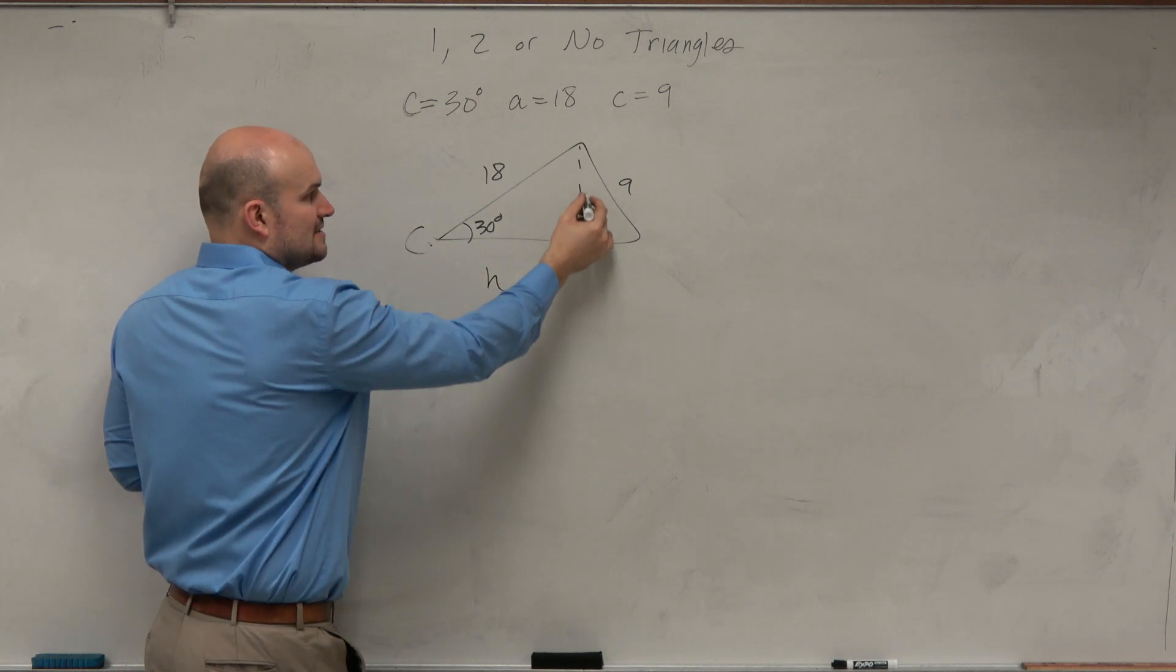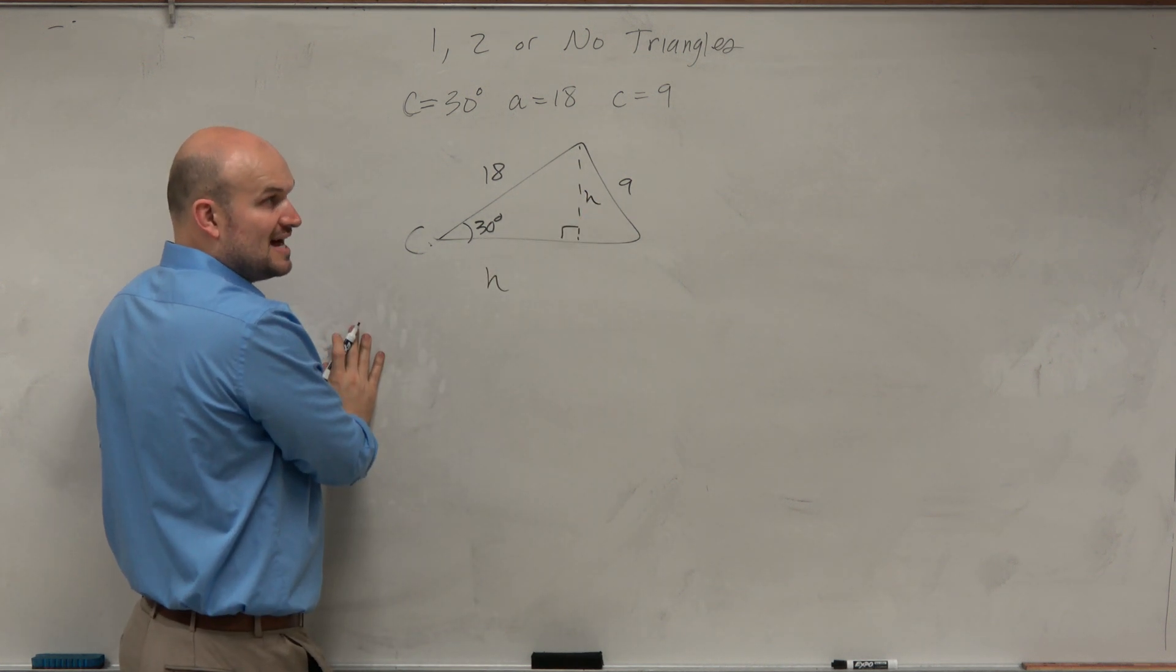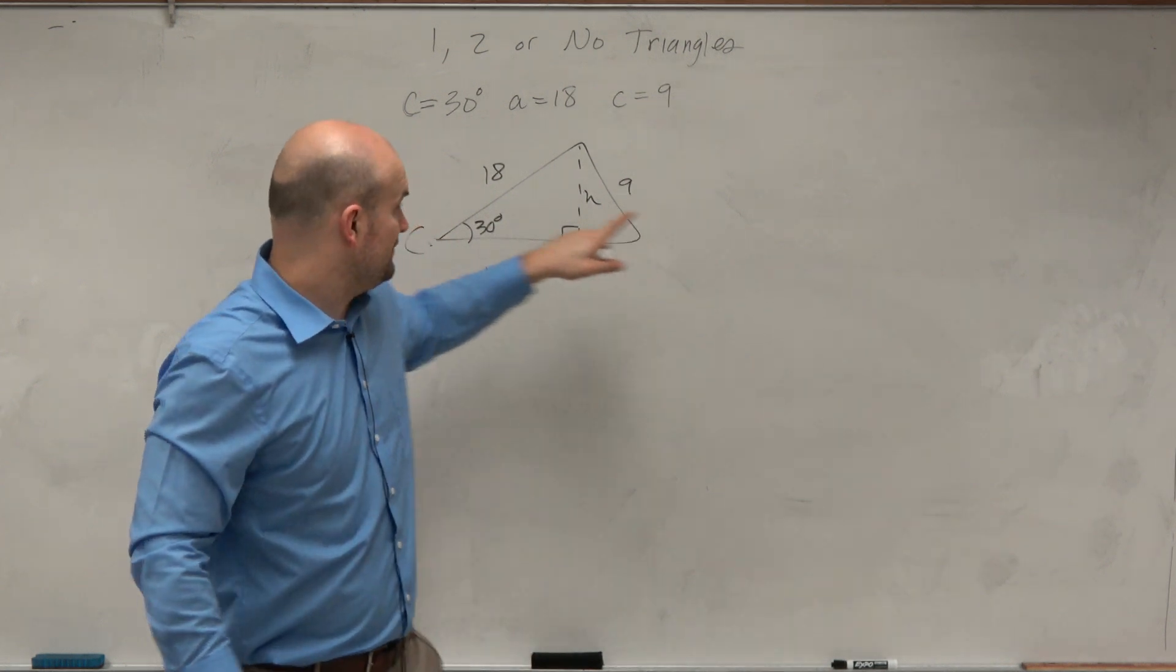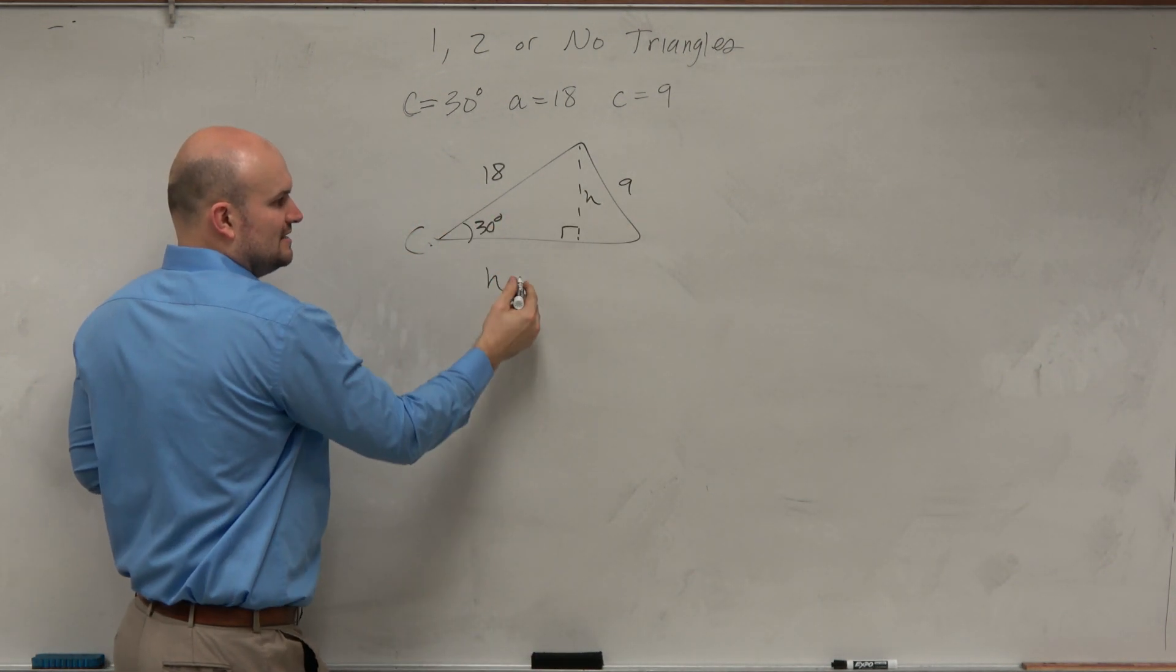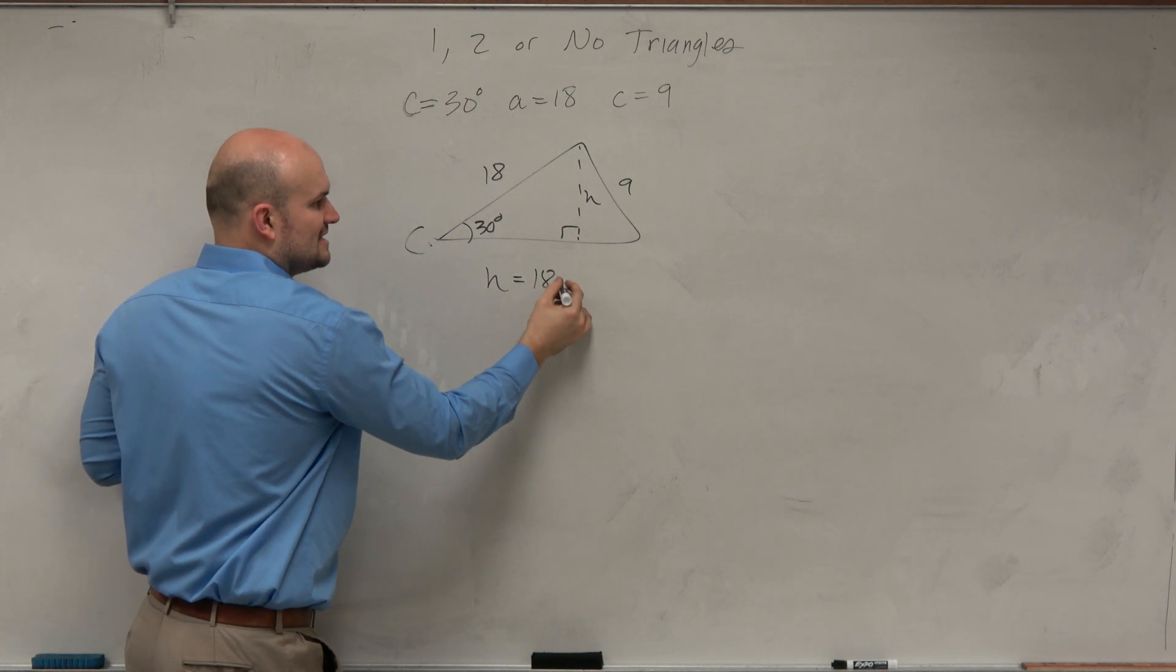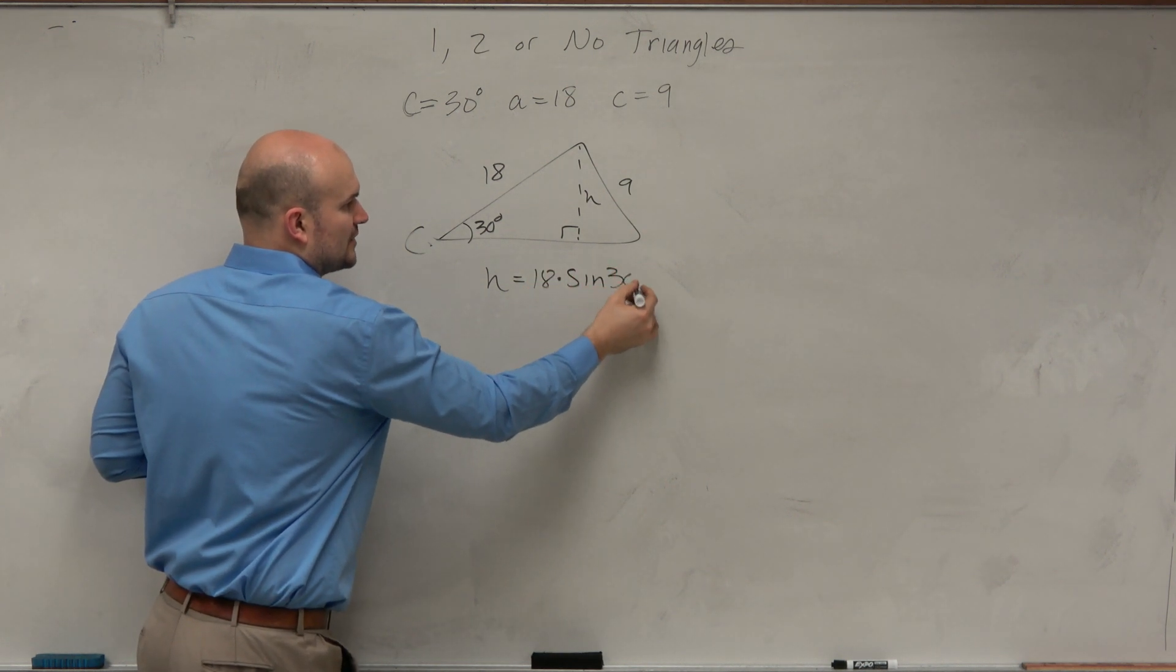Now the height in this case, by using law of sines, if you use the sine ratio here, sine of 30 degrees is h over 18. So therefore, height is 18 times the sine of 30 degrees.